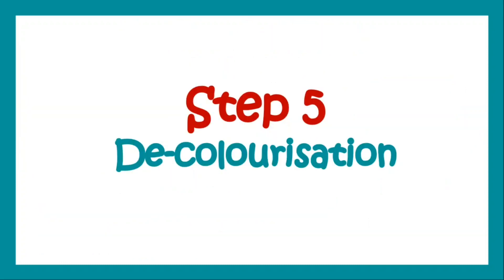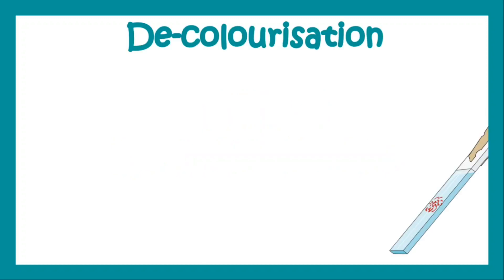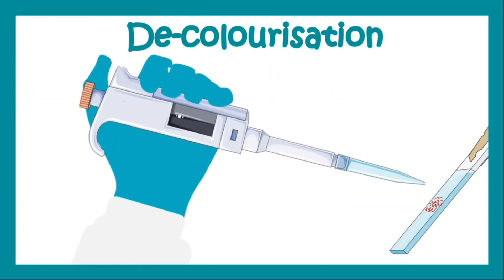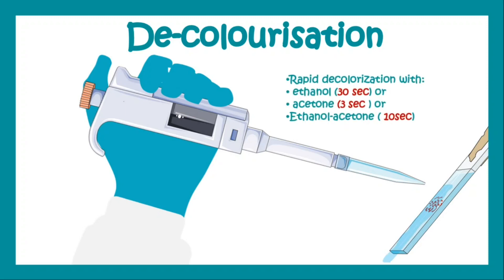Step five is decolorization. Decolorization is a very quick process and we decolorize using acetone or alcohol (ethanol). If we use ethanol we do it for 30 seconds; for acetone we do it for three seconds; and if we use a mixture of ethanol and acetone we do it for 10 seconds.